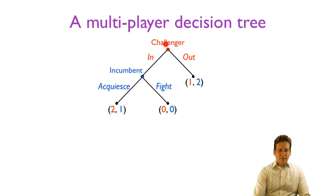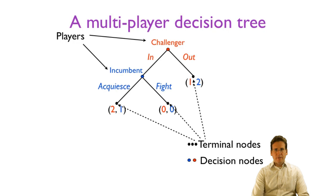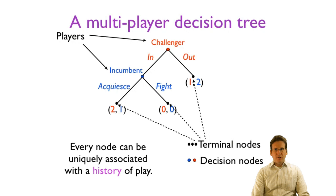In the game we just looked at, the players are the challenger and the incumbent, and the challenger can choose to enter the market or stay out. If the challenger enters, the incumbent gets to choose to acquiesce or to fight that entry. The terminal nodes are where the game ends and we assign payoffs to those. For example, if the challenger enters the market and the incumbent fights, that's really bad for both of them and they both get a zero payoff. The decision nodes are where the challenger must make a choice and where the incumbent must make a choice.